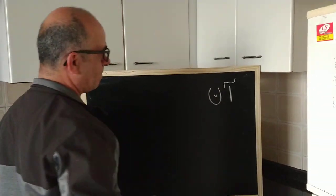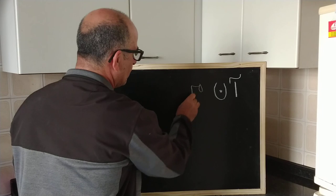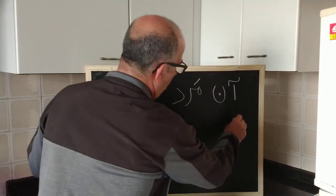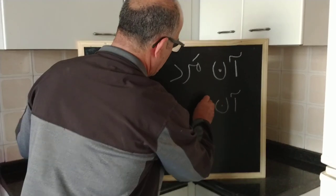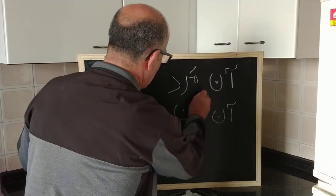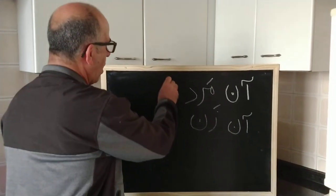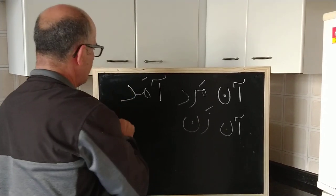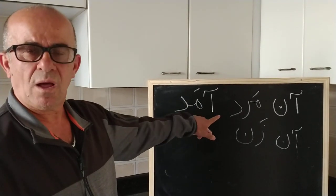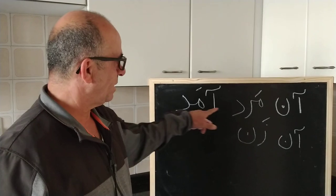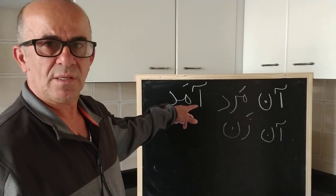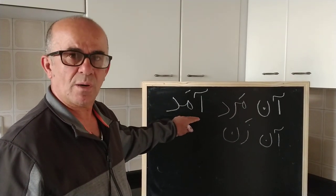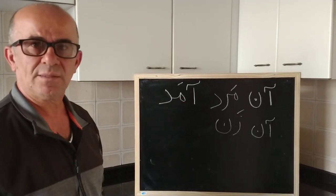On mard — that man. On zan — that woman. On mard amad — that man came, that man arrived. 'Amad' is the past tense of 'to come,' to arrive.